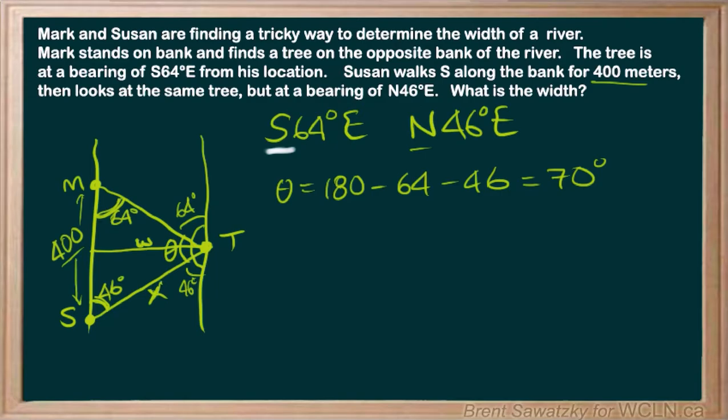And then if we look back at our X, we can say that we have the angle across from that is 64. So from a sine law point of view, we have everything we need in order to solve for X. So let's lay this out. So we're looking for the X. So let's put that on top. And opposite of that, we have sine 64. And then we pair that up with the 400 is our side. And the angle across from that we determined was 70. So sine 70.